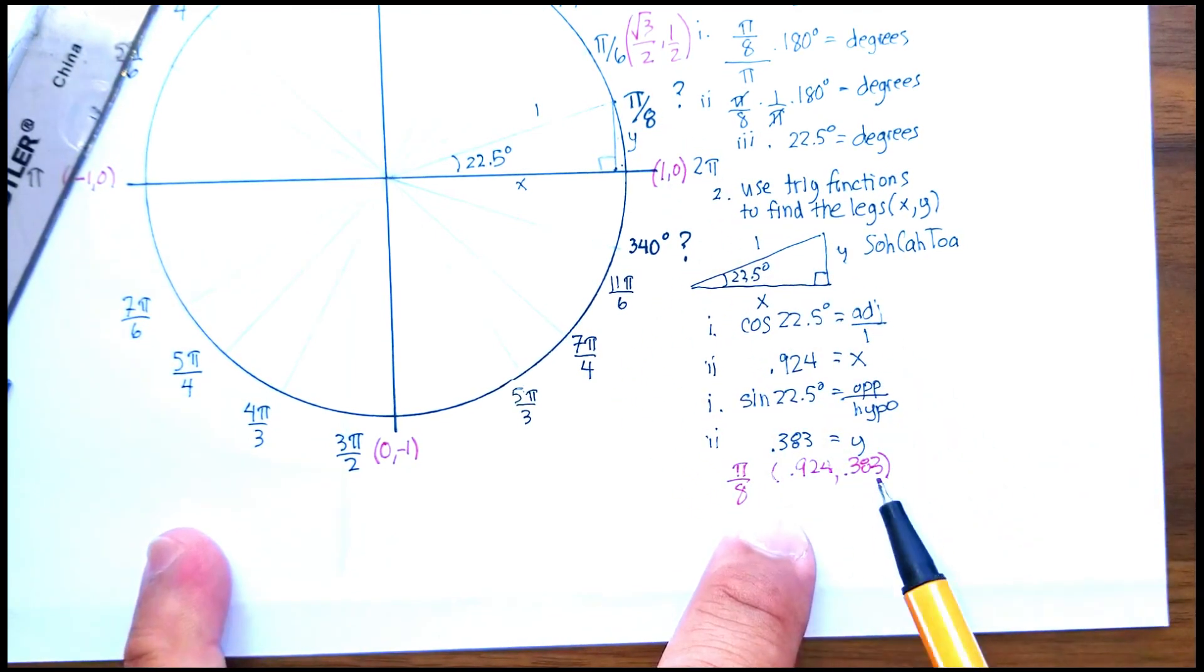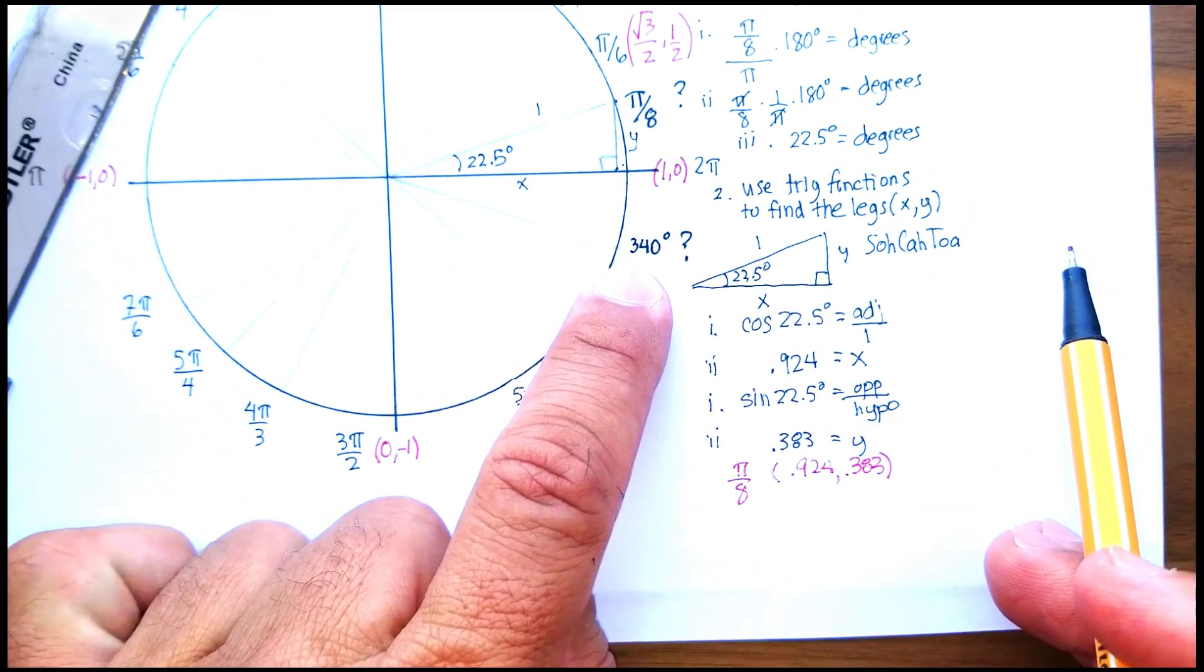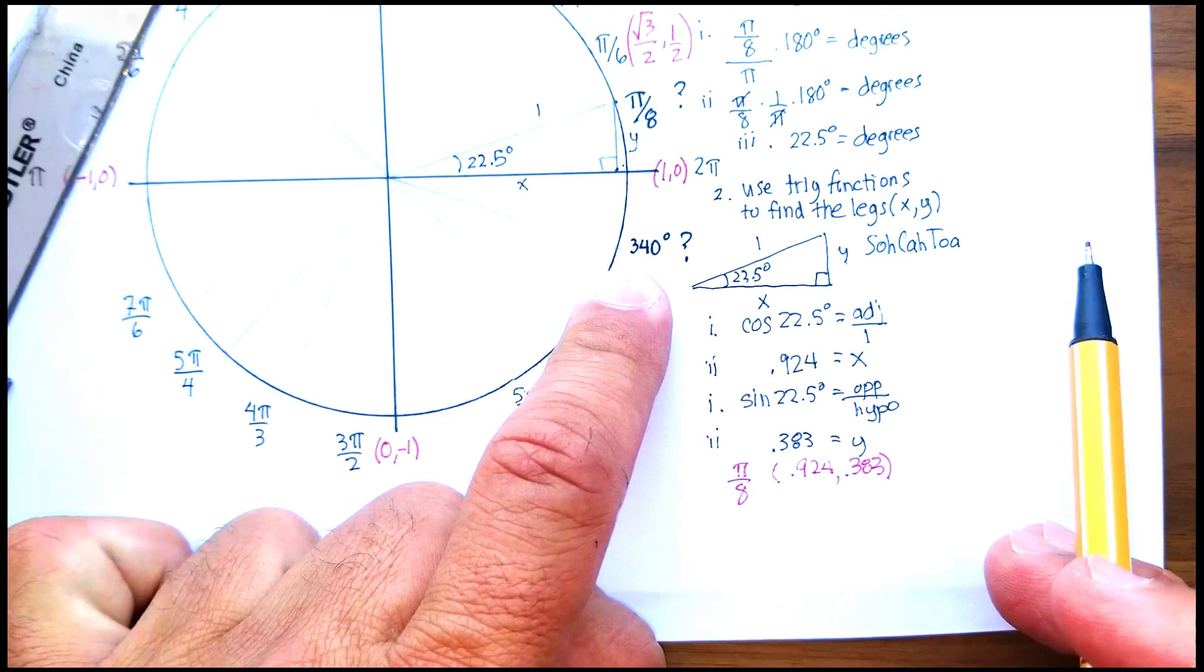And that's how you find the coordinates that correspond to a radian value that's not one of the special triangles. Now I'll let you try it for 340° and we'll see what you come up with.